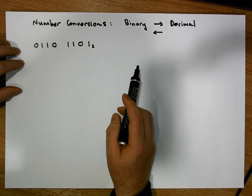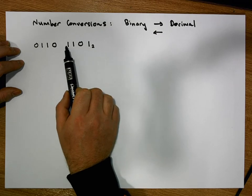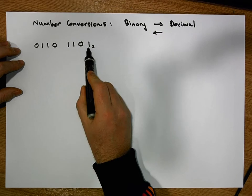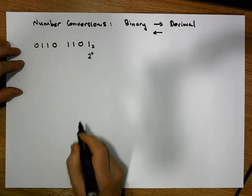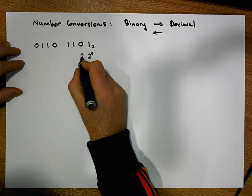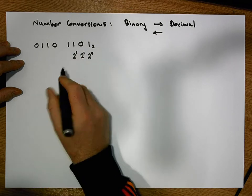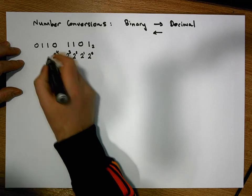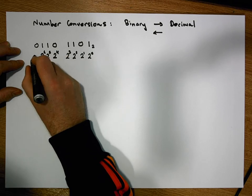The types of number systems we deal with are what are known as positional number systems, where each digit within the binary number represents a multiple of powers of 2. The first digit, or least significant digit, represents how many powers of 2 to the power of 0 there are in the number. The second digit represents 2 to the power of 1, the next 2 to the power of 2, then 2 to the power of 3, then 2 to the power of 4, 2 to the power of 5, 2 to the power of 6, and 2 to the power of 7.